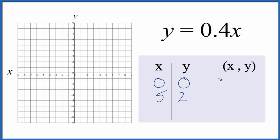Again, you can choose any values you want. I just find these easier. Then I'll put negative 5 in here for x and that'll give me negative 2 for y. So these are the points that we'll graph for the equation y equals 0.4x.